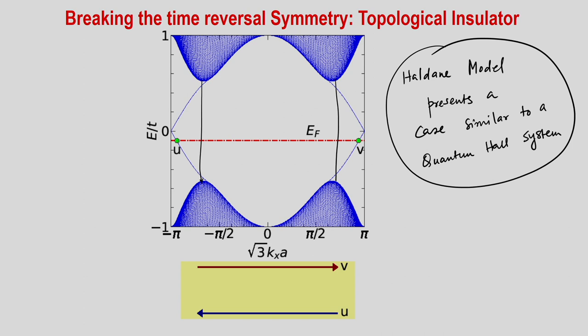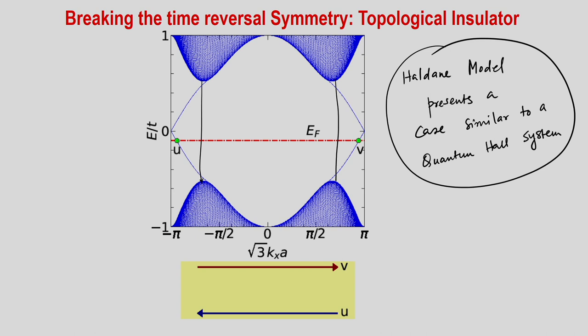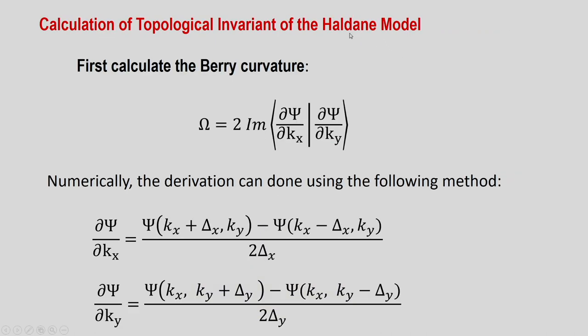The main inference from all these derivations is that the Haldane model indeed presents a case that is just like the quantum Hall insulator. Now we need to understand that if there are edge modes in the system, there has to be a topological invariant. In a quantum Hall system that topological invariant is the quantization of the Hall plateaus, which doesn't go away as long as time reversal symmetry remains broken.